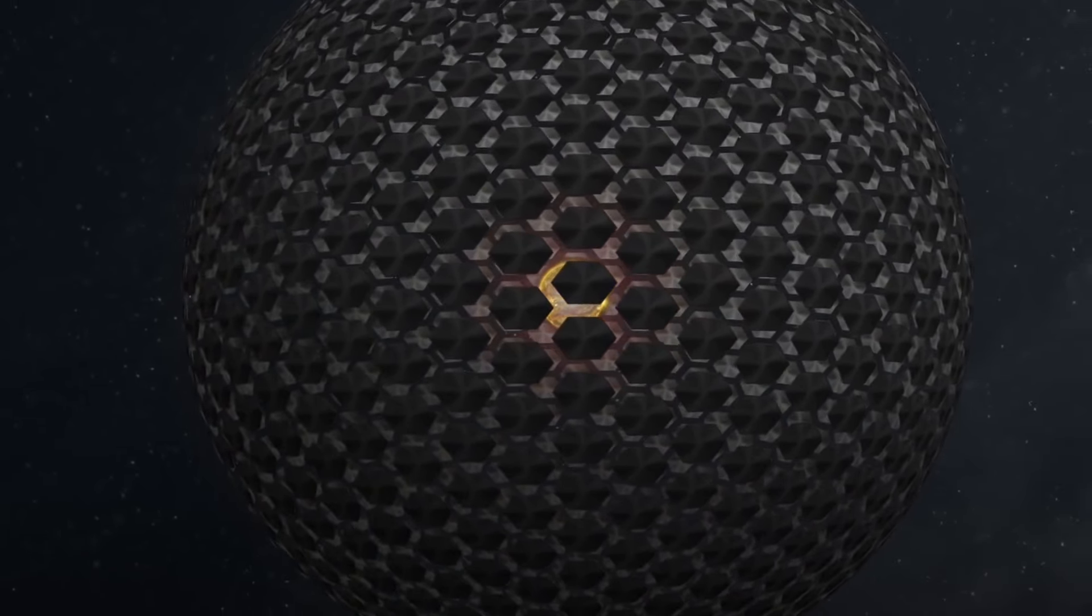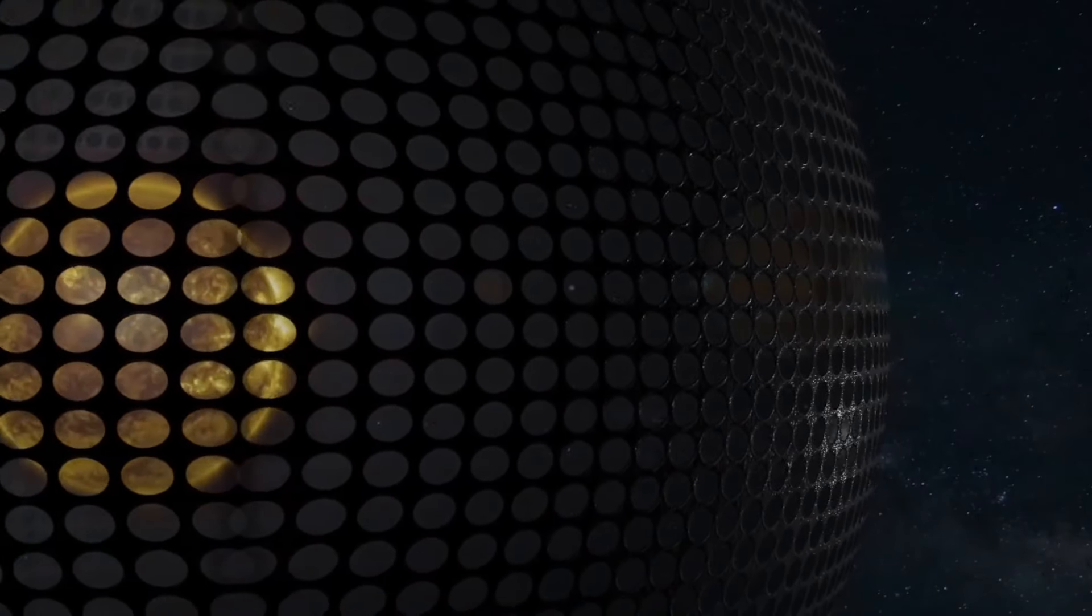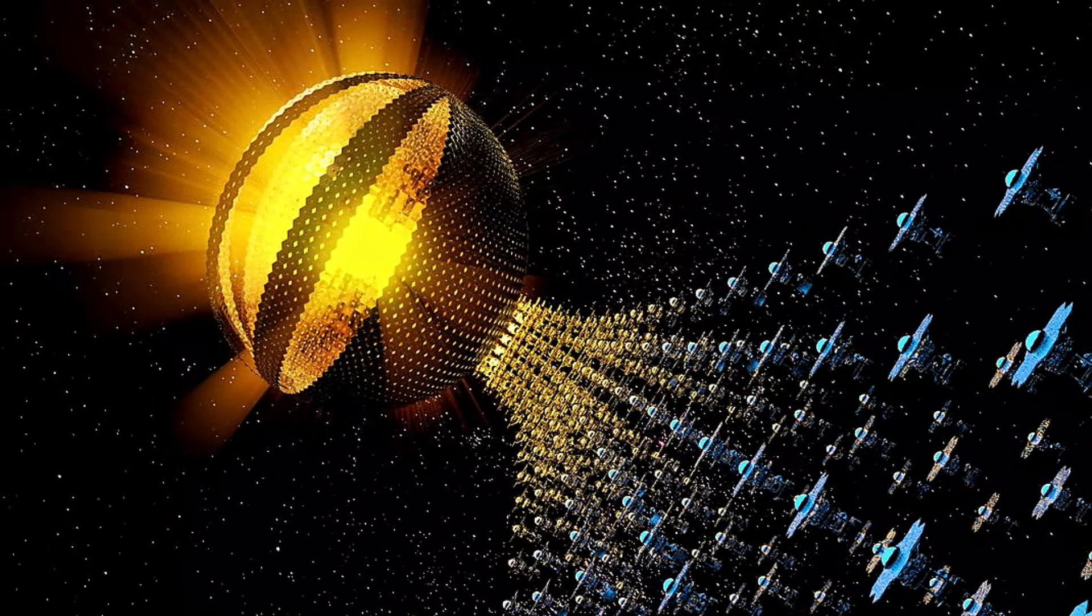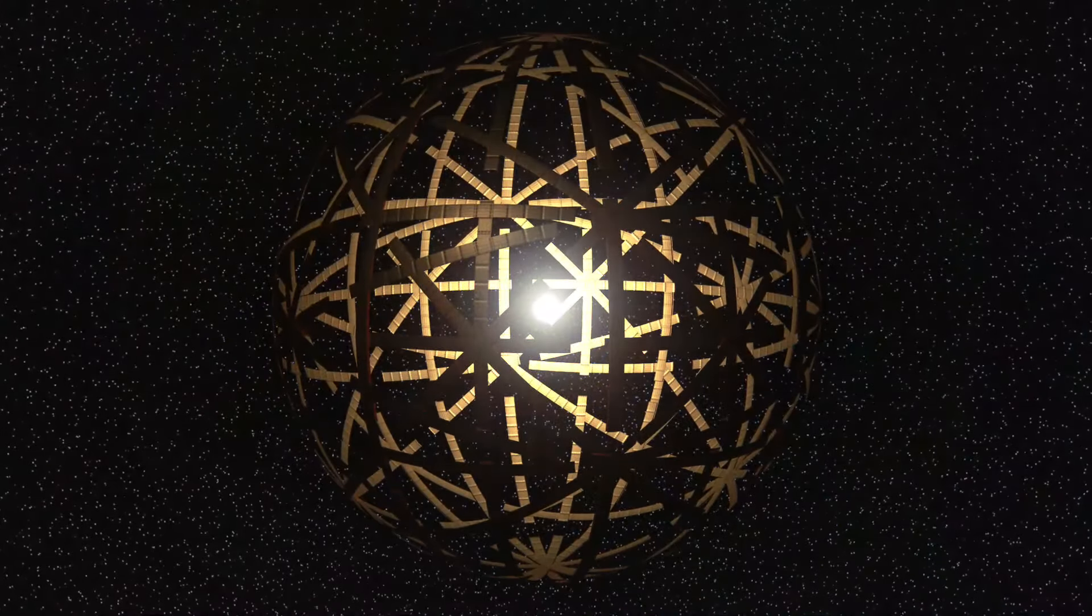There are several proposed designs for Dyson Spheres, ranging from partial to complete enclosures around a star. The most famous variant is the Dyson Swarm, consisting of a vast array of individual satellites or habitats orbiting a star at various distances, collectively gathering its energy.